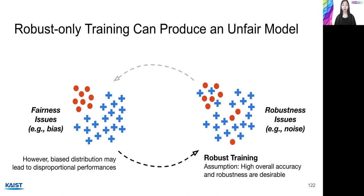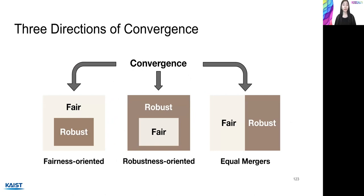Fairness and robustness are closely related properties, where only satisfying one may have a negative effect on the other. Naturally, the two topics are increasingly being studied together, and we will provide a taxonomy of such approaches. There are three natural approaches: one is to make fairness techniques more robust to noise, which we call fairness-oriented approaches; another is to make robustness techniques more fair against data bias, called robustness-oriented approaches; and finally, one can address fairness and robustness in equal terms, which we call an equal merger.